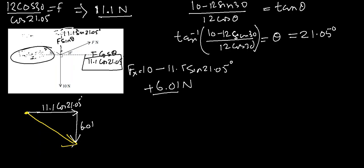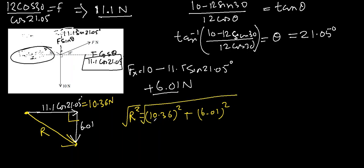And now my resultant force will be in this direction from the tail of the first to the head of the second. This is 90 degrees, so I can use Pythagorean theorem. Before that, let me evaluate 11.1 cos 21.05. That comes out to be 10.36 Newton. So this resultant force will be R square equal to 10.36 Newton square plus 6.01 square. The square root to find R. And I will put this in my calculator, which comes out to be 11.97 Newton or you can say 12 Newton almost.